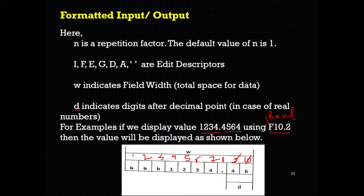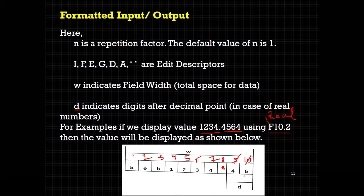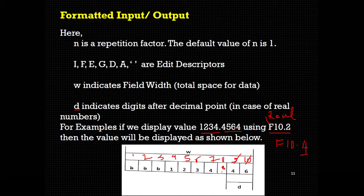After the decimal point we write the values from the fractional part — so 4 and 5. We get 1234.45. If you want all four decimal digits as displayed, then we need to use f10.4 instead. f10.4 will give 10 spaces total and 4 spaces after the decimal point, to accommodate all four digits 4, 5, 6, 4.